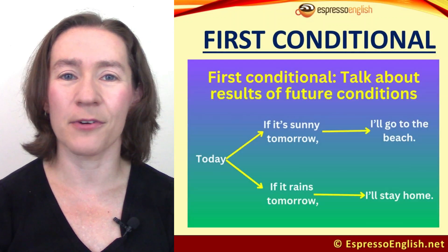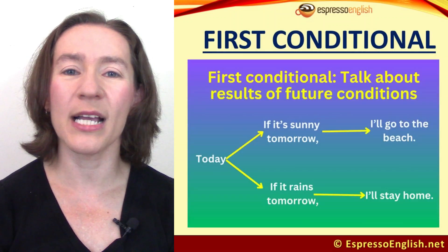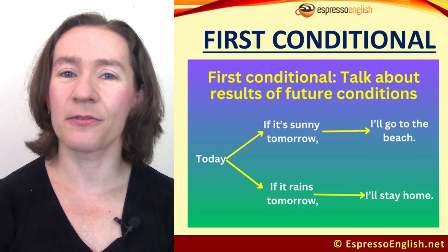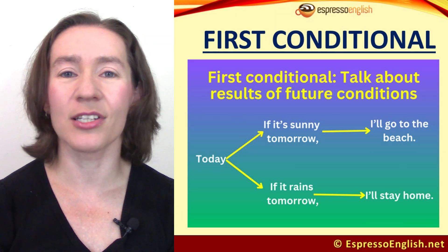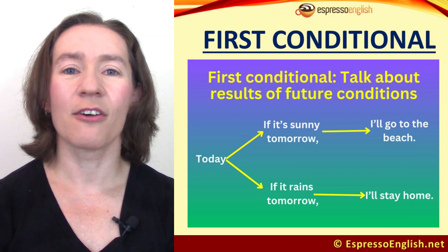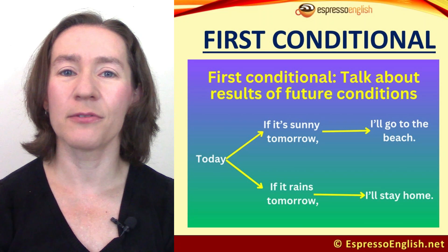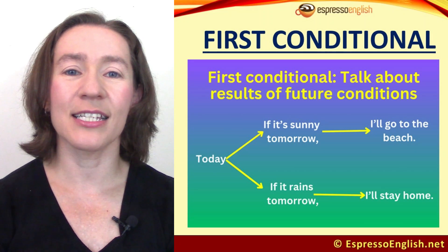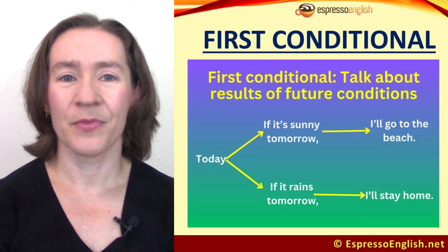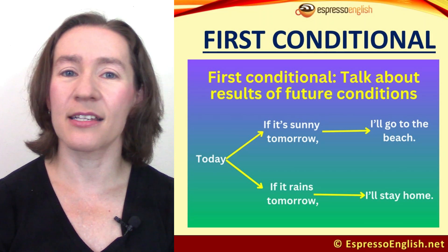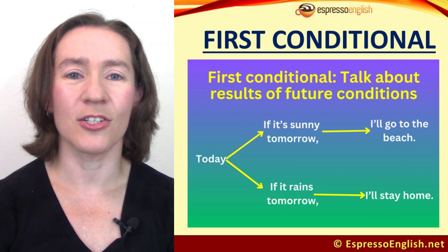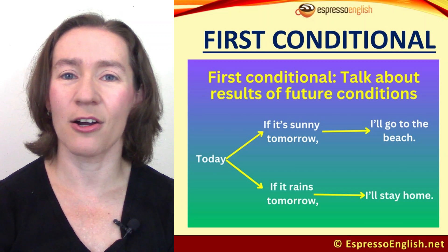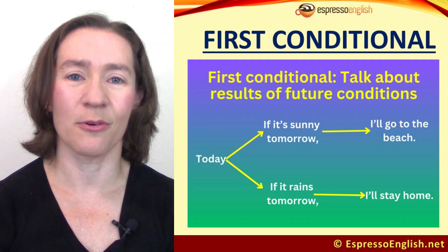So what is the first conditional? When do we use it? We use the first conditional to talk about results of possible future conditions. Let's look at these examples. If it's sunny tomorrow, I'll go to the beach. If it rains tomorrow, I'll stay home.